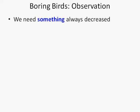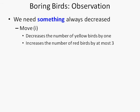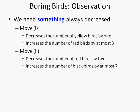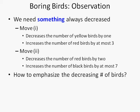Therefore, we know that we need something that always decreases. We observe that move 1 will decrease the number of yellow birds by 1, but increase the number of red birds by at most 3. Move 2 will decrease the number of red birds by 2, but increase the number of black birds by at most 7. So the question is how to capture the decreasing number of birds.